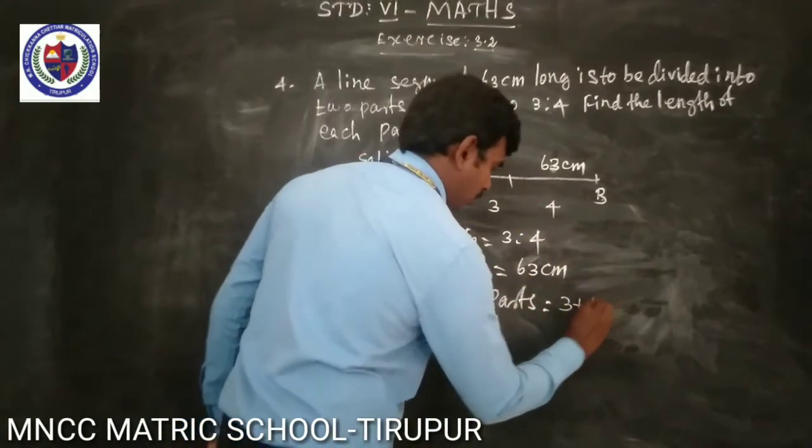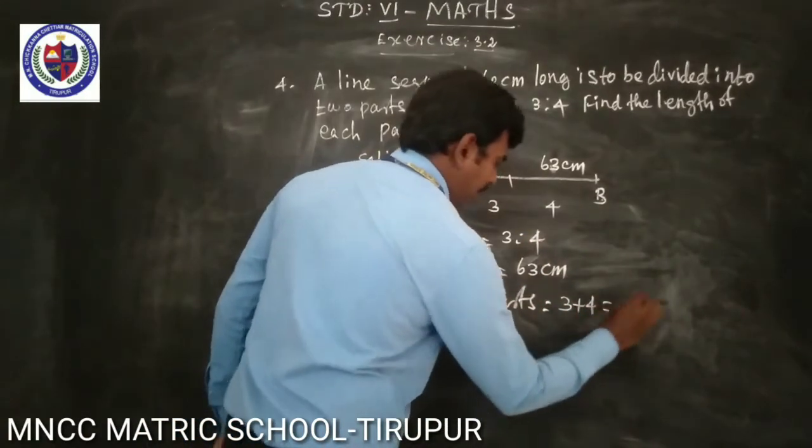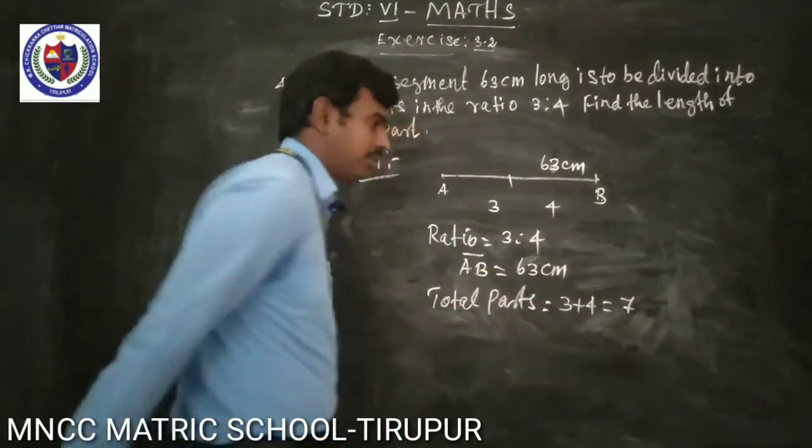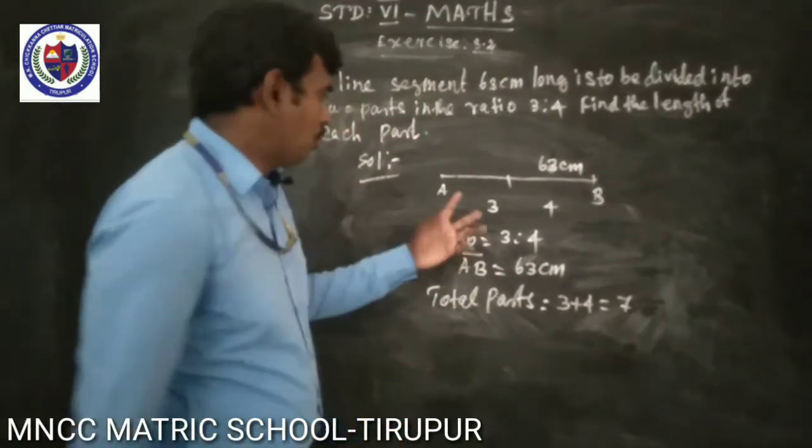3 plus 4 is 7. The sum of the ratio parts is 7.